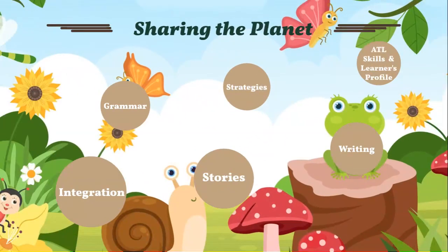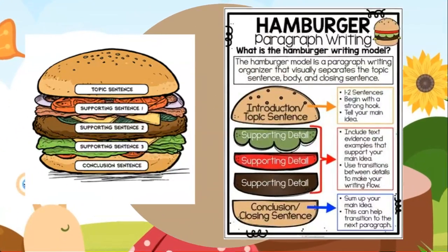Moving on to the writing part. In this unit, I will be teaching you how to identify the elements of a paragraph. We will start by extracting or identifying the topic sentence, supporting details, and the concluding statement in a paragraph. After that, you will learn how to write a well-structured paragraph following the hamburger writing strategy. Sounds fun!